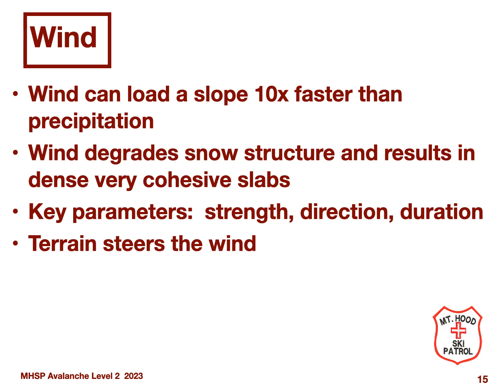The second leg of the weather triangle is wind. As mentioned in Part 2, wind can load a slope 10 times faster than precipitation. On Mount Hood, wind loading and wind slabs are very common avalanche hazards. Key parameters to note are wind strength, wind direction, and wind duration. Also note that local terrain features will steer the wind, so you can get very local effects inconsistent with larger macro wind patterns. For example, localized valleys or gullies can increase wind speed and magnify wind loading in very specific areas beyond what the avalanche forecasts are indicating.